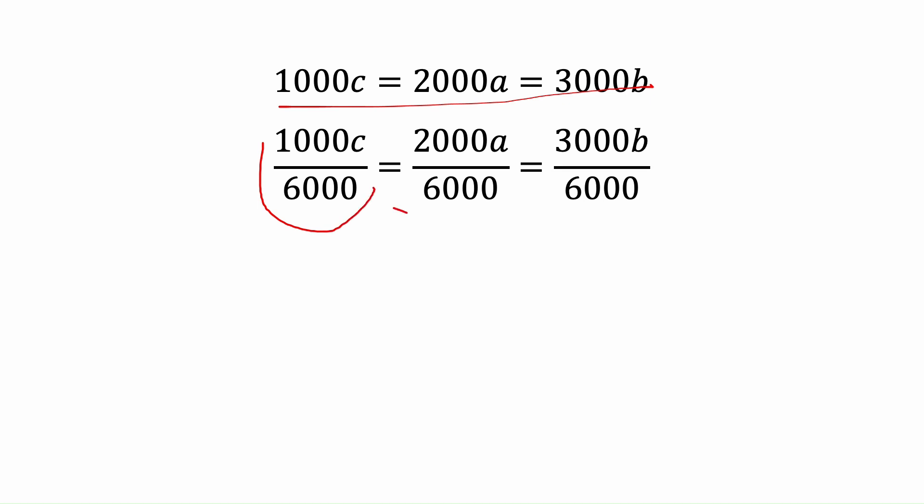We can divide each of them by 6000 to simplify it. So they're going to cancel by each other and we will have c over 6 equals a over 3 equals b over 2. Because all of them are equal, we can assign a constant number to all of them.